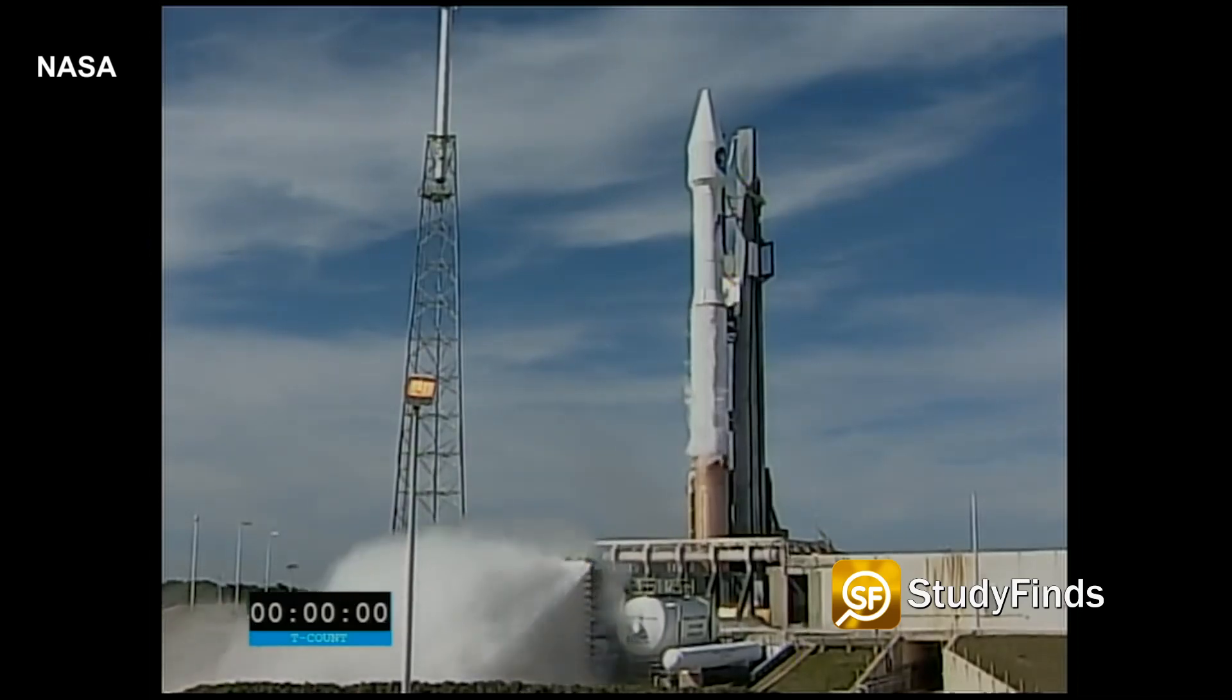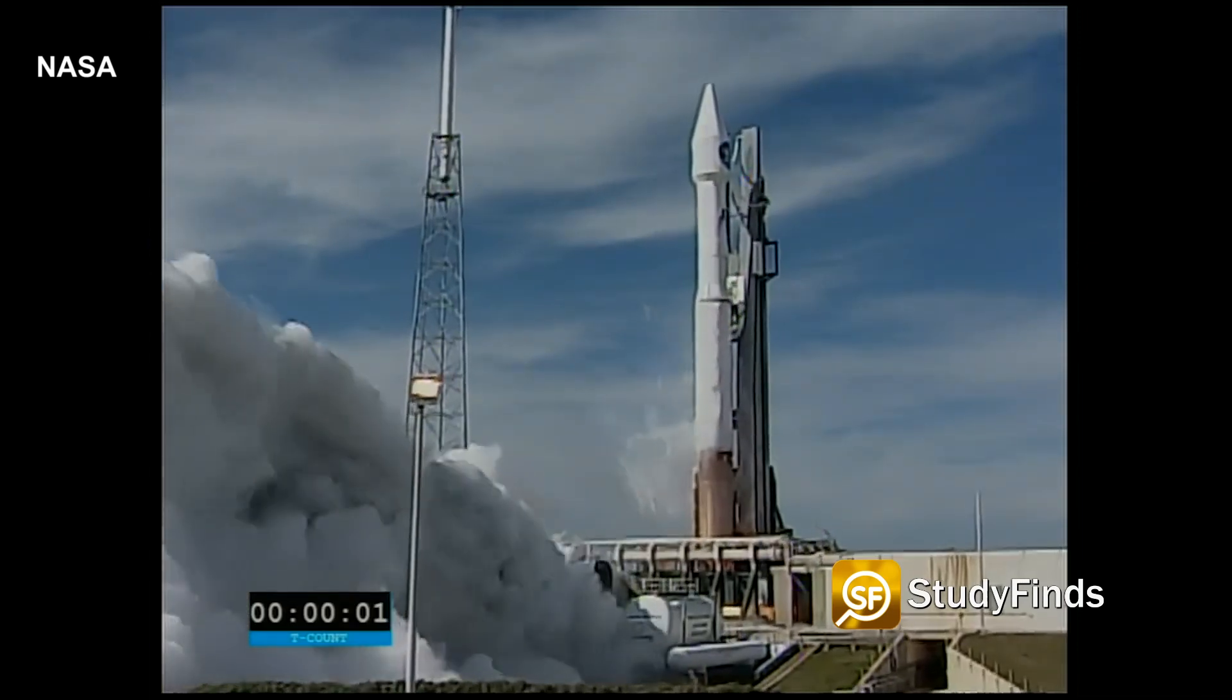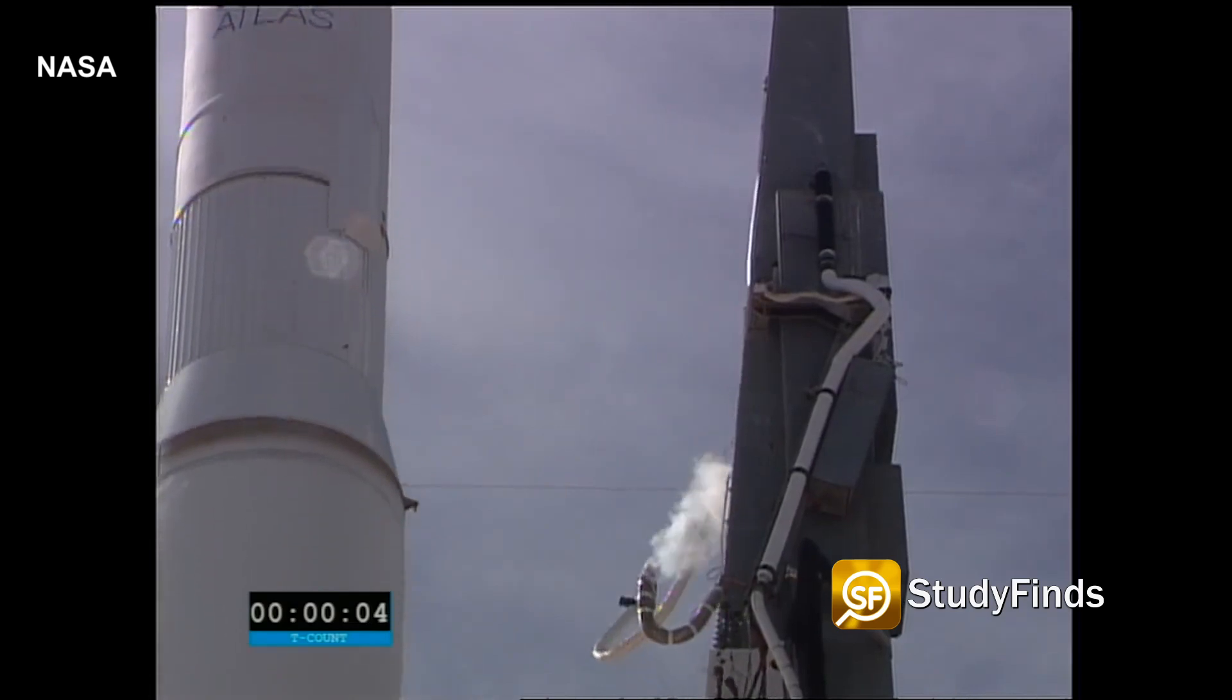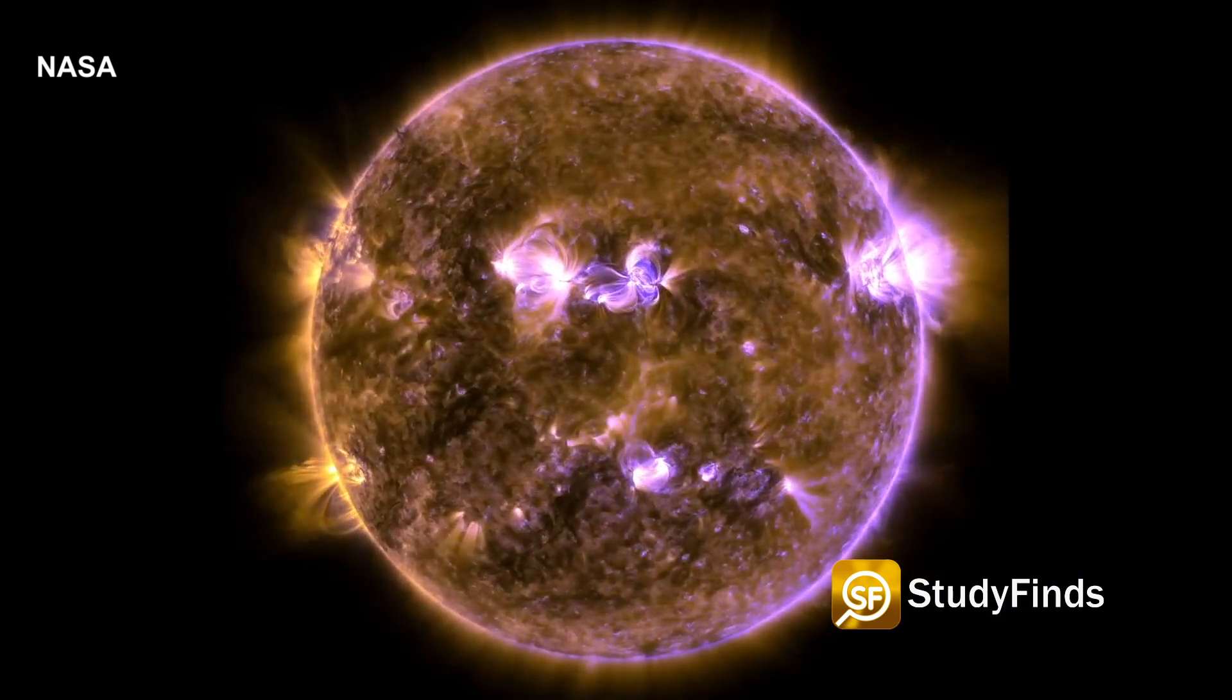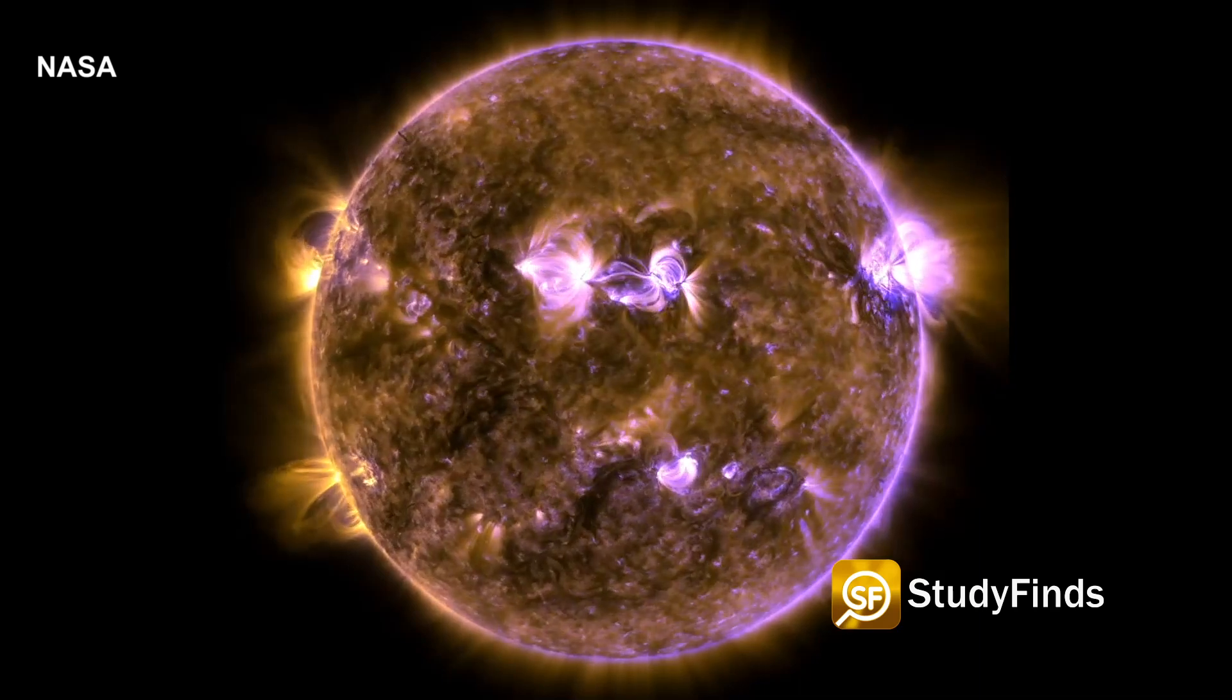In this study, researchers analyzed images of the sun captured by the Atmospheric Imaging Assembly on board NASA's Solar Dynamics Observatory. 3D simulations of solar flares were then created and compared with their observations.